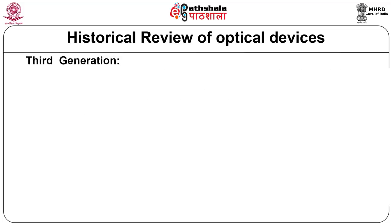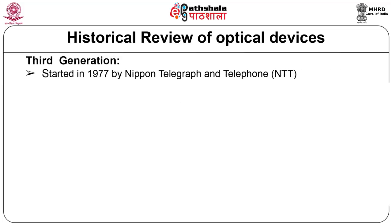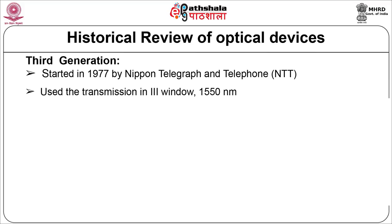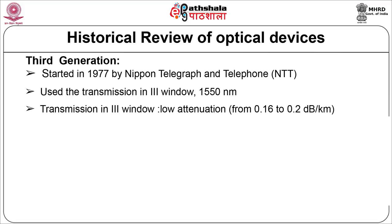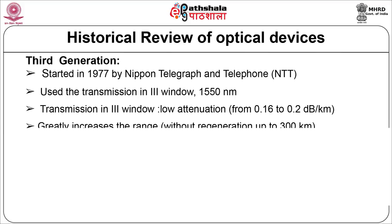Third generation: it was started in 1977 by Nippon Telegraph and Telephone by utilizing transmission in the third window, that is 1550 nanometer, and it was developed in the 1990s. Transmission in the third window has low attenuation, which greatly increases the range without regeneration.